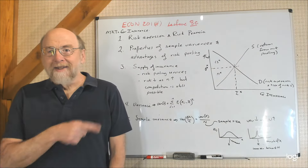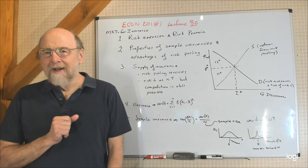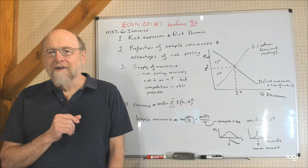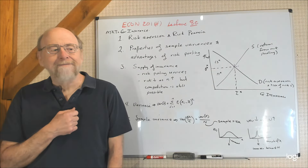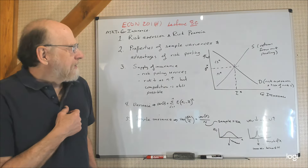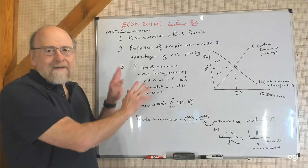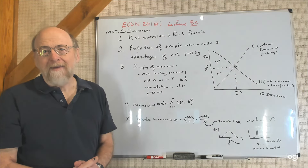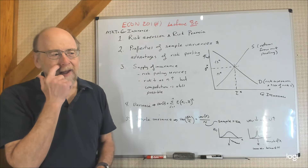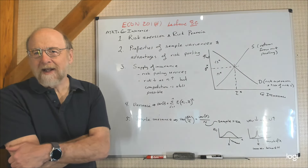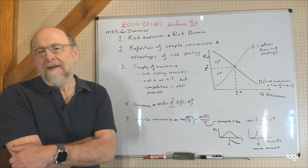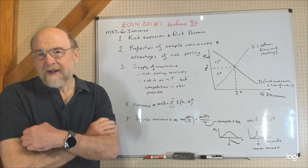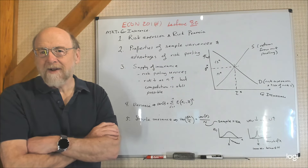Hello, I am Roger Congleton and this is Econ 201H lecture 8c, which is the third lecture in the chapter on risk. I've written down a bunch of notes so that I wouldn't have to write them as I was talking. This is the first half of the lecture, which deals with the market for insurance, and we're going to be building on material that we developed in the previous lecture.